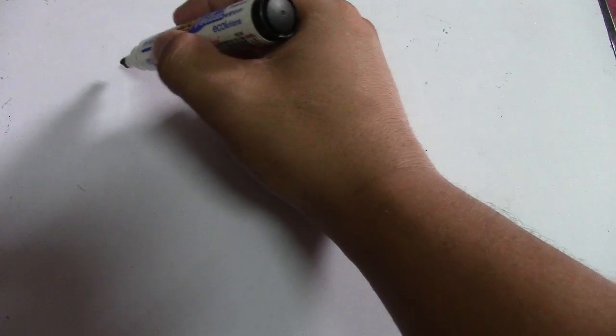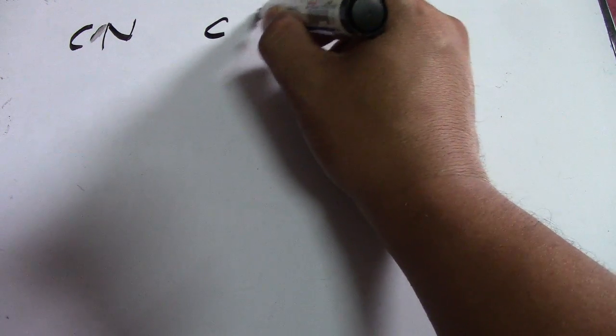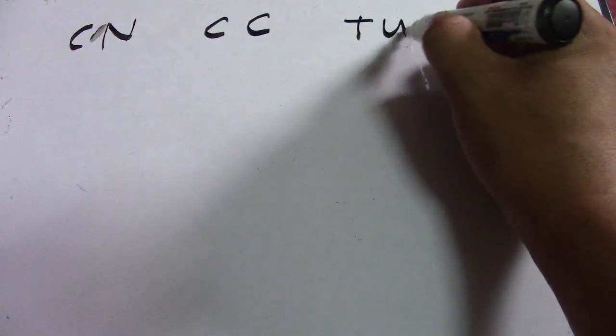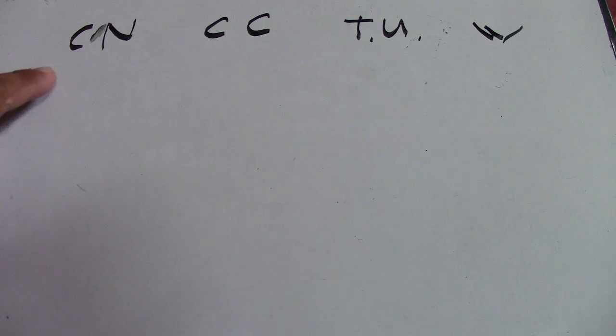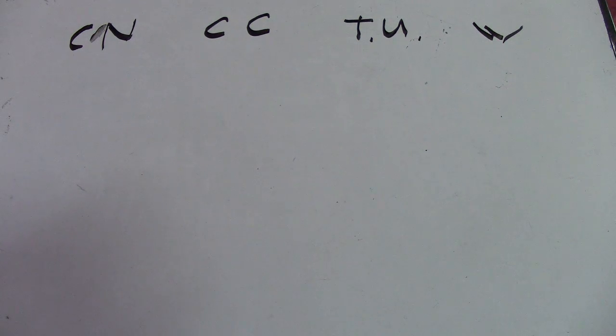So we have four columns in this table: common name, carbon content, typical use, and weldability. These are the types of plain carbon steel we will be covering.